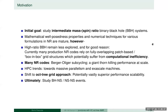Currently many NR codes rely on a computational domain strategy involving fully overlapping patch-based structures called box-in-box, and there is a potential to suffer from computational efficiency. As you attack problems requiring more and more refinement, just throwing more resources at the problem is not going to get you there because efficiency degrades. The current trends in HPC are towards more and more massive parallelism rather than increasing per-node computational power.